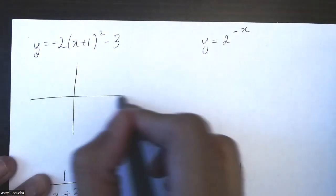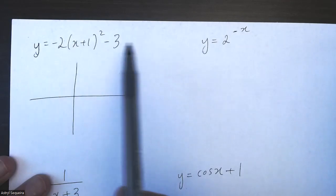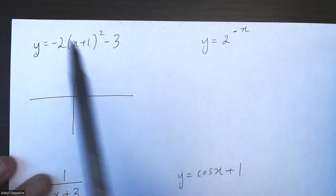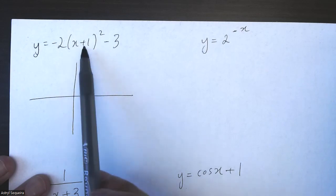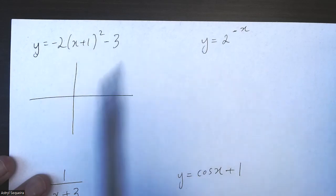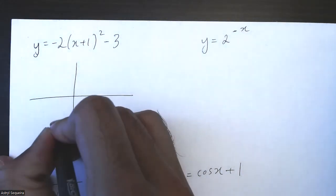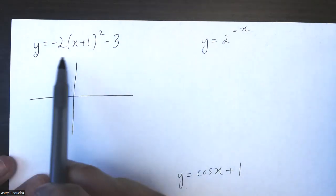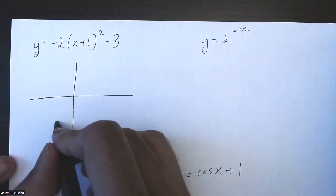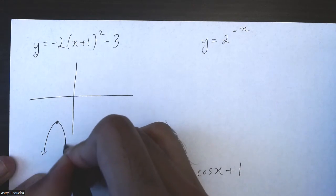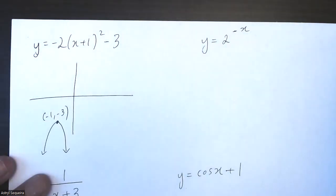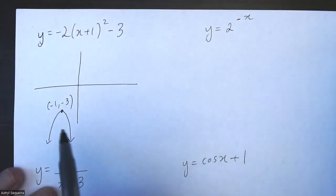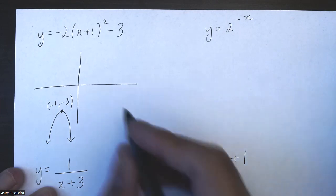This first relation is a quadratic in vertex form. I know that my vertex is at (-1, -3) and my 'a' value is negative, so I know it opens downwards. I'll sketch it out first and then do the domain and range. For my domain, it goes left towards negative infinity and right towards positive infinity.